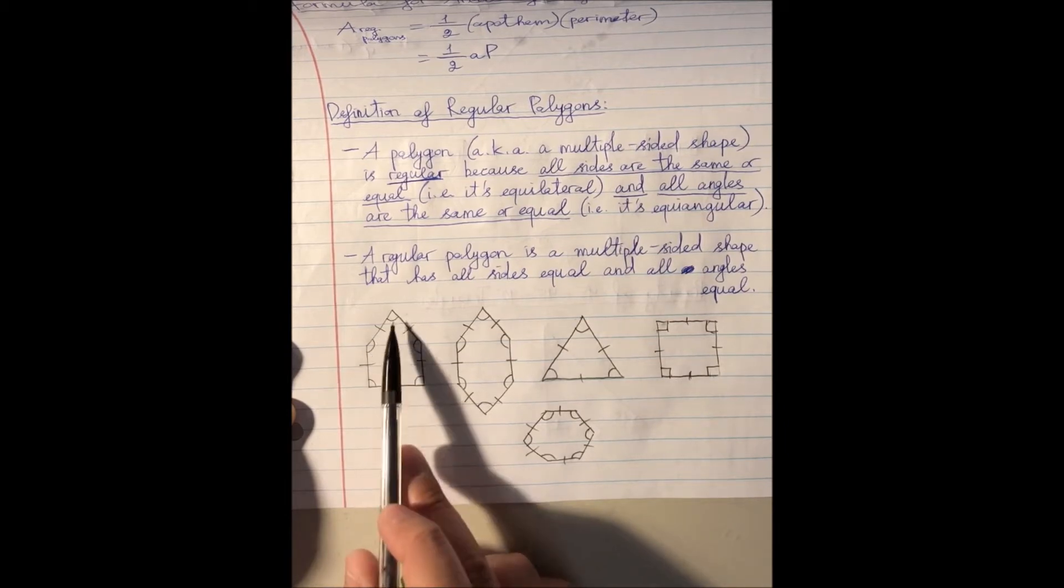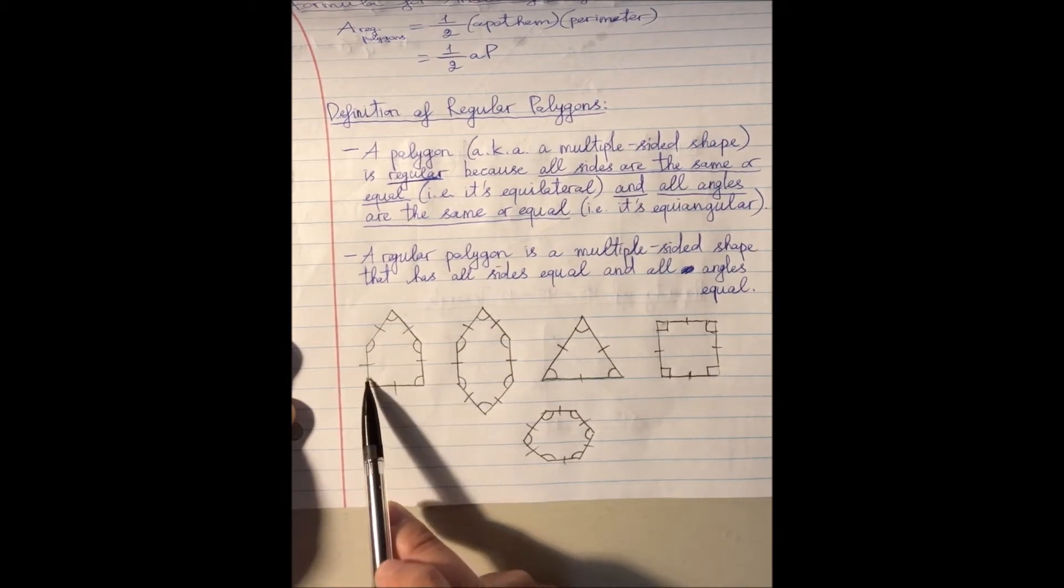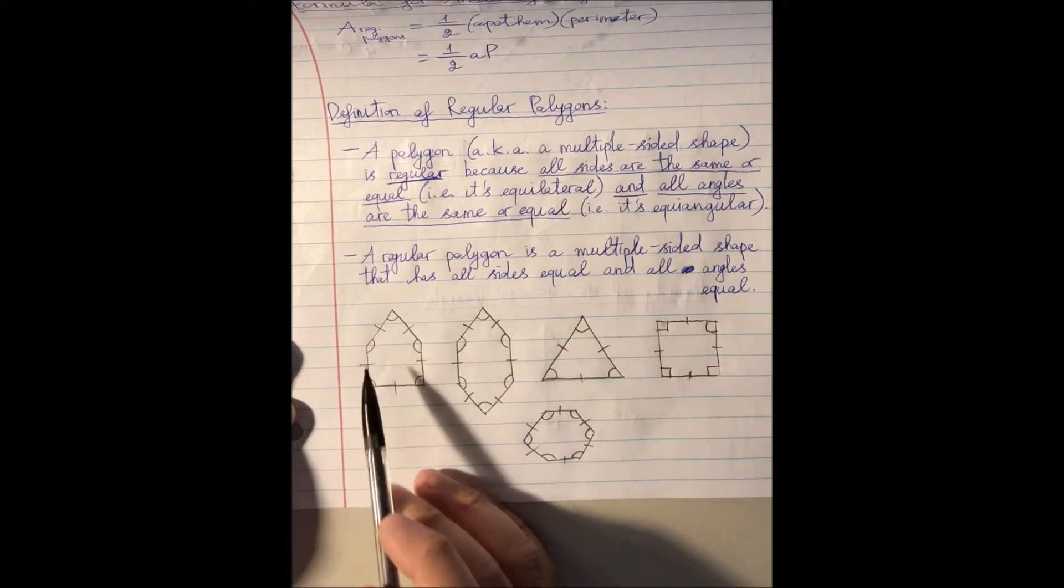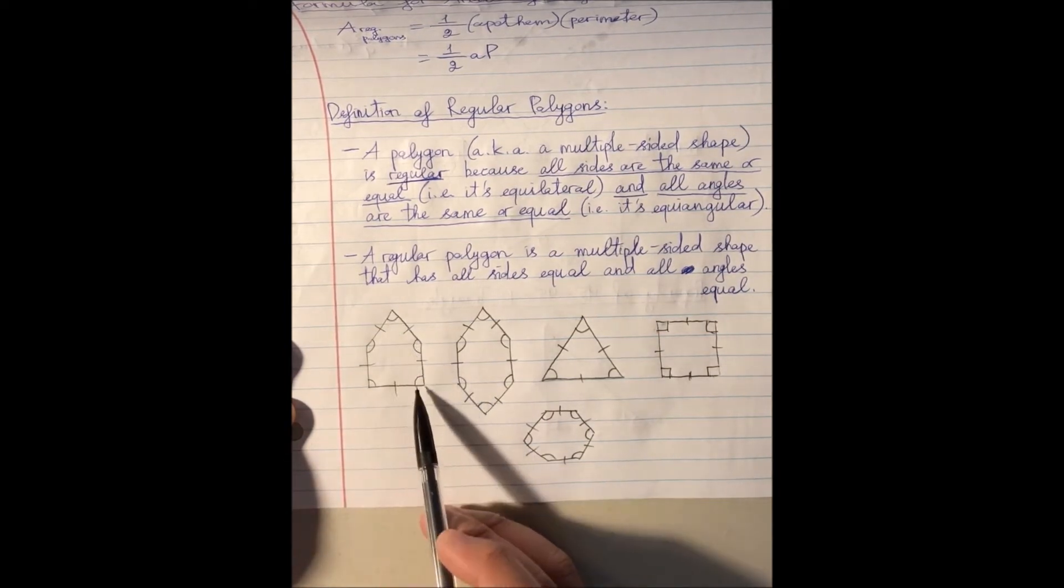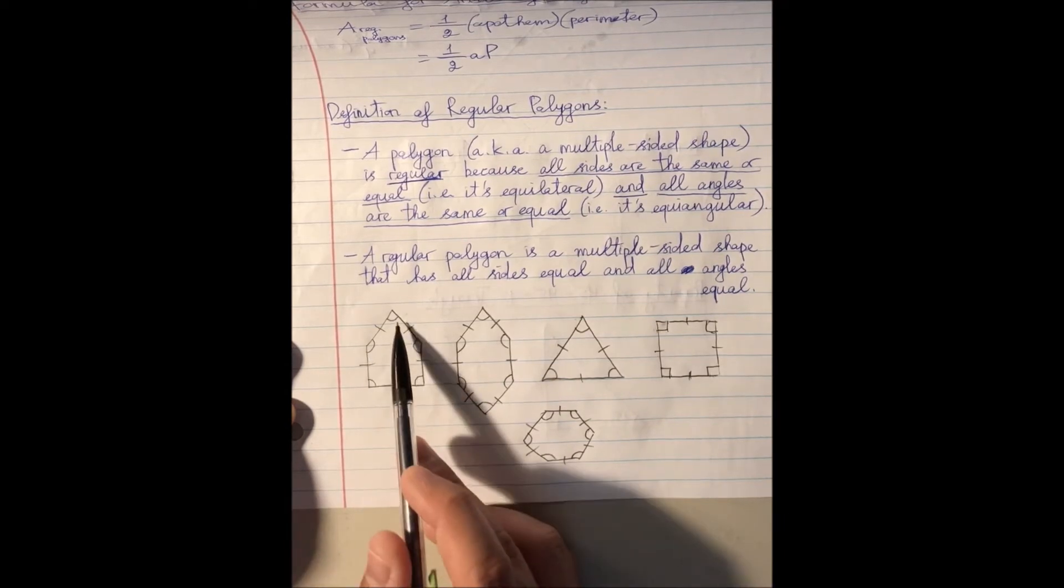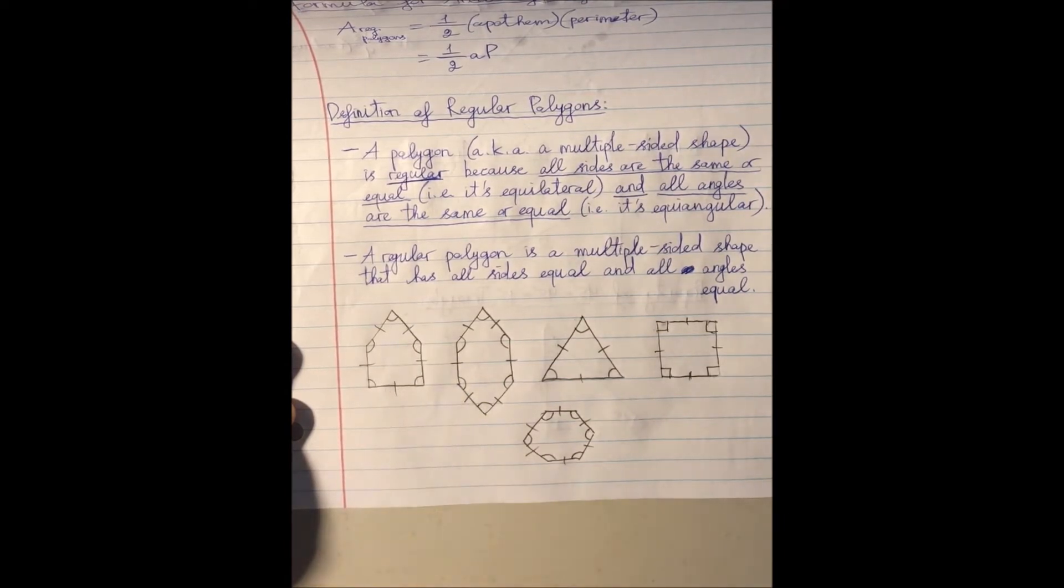by the singular markings in my pictures here, that indicates that this side, this side, and this side are all equal to each other. The same thing can be said for the angles, because these angles have the same singular marking, that means all of these angles are the same. So that's how you draw the picture of this definition.